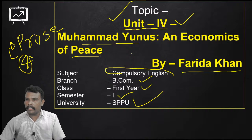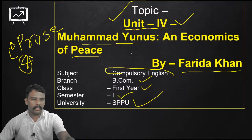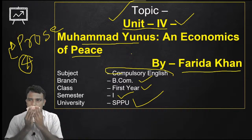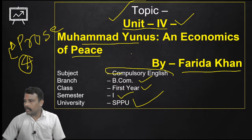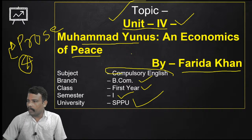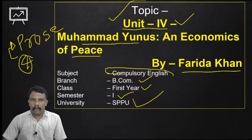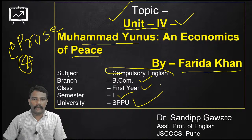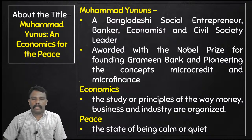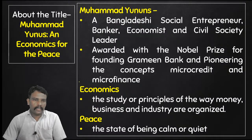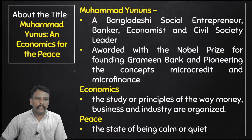Only 54 students are online right now — 50% of class is not online. Pinky Choudhari said he was the first economist to win a Nobel Peace Prize. Absolutely correct, and congratulations! Very nice — everybody should know about this particular person. This is an article written by Farida Khan. Let us start. About the title: everybody knows what is the title of our article — Muhammad Yunus and Economics of Peace. This is the title.